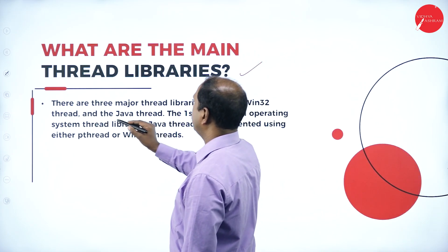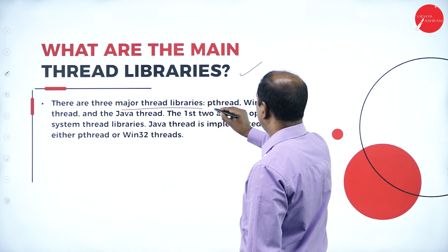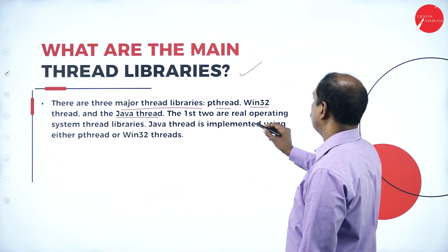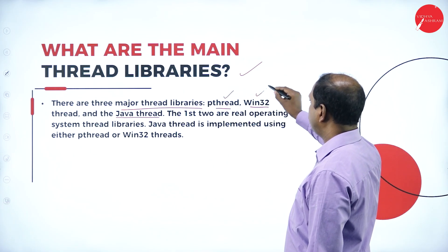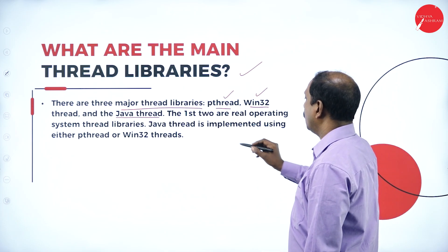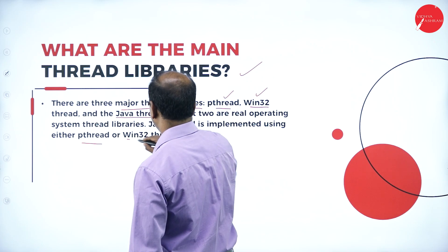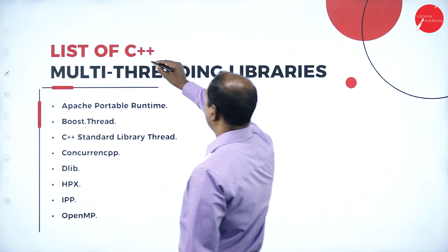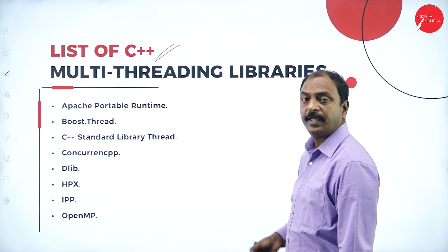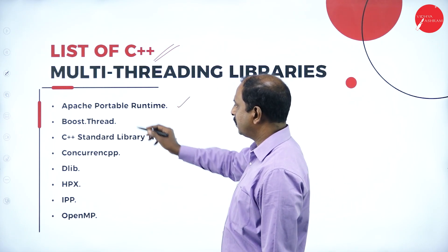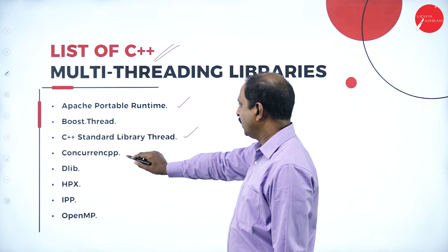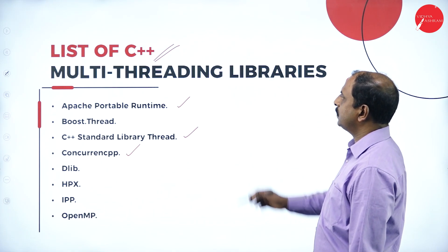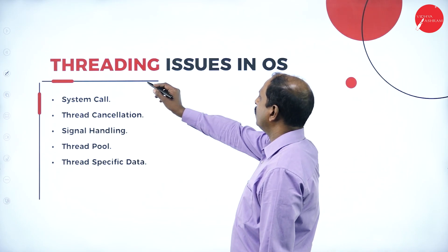The next concept is thread libraries. There are three major thread libraries: Pthreads, Win32, and Java Thread. Pthreads and Win32 are real operating system thread libraries, while Java Thread is implemented using either Pthreads or Win32. Some C++ thread libraries include Apache Portable Runtime, Boost.Thread, the standard library thread, Concurrence, D-lib, HPX, IPP, and OpenMP.